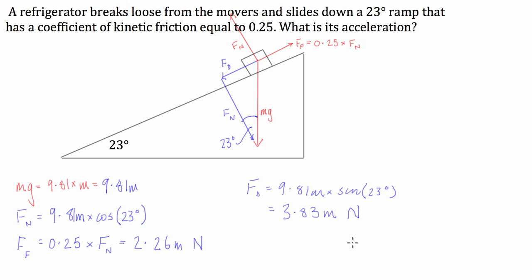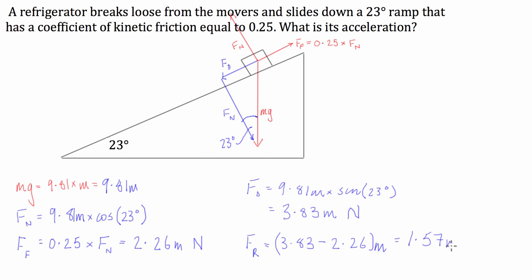We have two forces going in opposite directions to each other. We have to find the resultant force of the force going down the ramp and the frictional force opposing motion. So our resultant force Fr is going to be equal to 3.83 minus 2.26 — all in terms of the mass of the object — which gives us 1.57m newtons. So we have 1.57 times the mass of the fridge in newtons acting parallel to the plane.